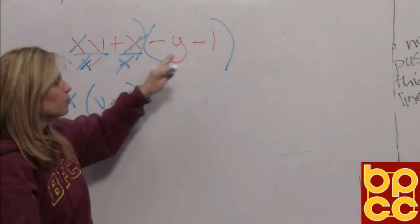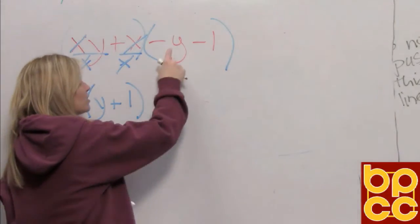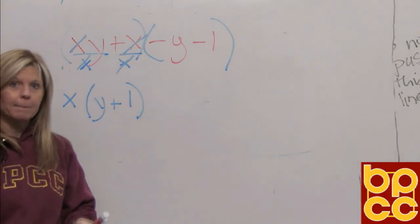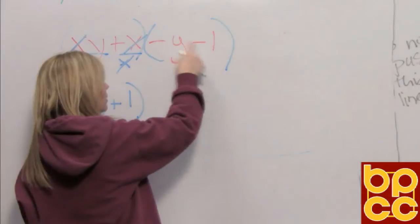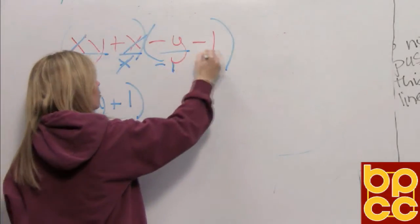Now, you must do the GCF of these terms. Now, I know what you're thinking. Well, I can't divide a letter and a number by the same thing. Well, you can. If you look, both this variable and number are negative. And you can divide them both by the number negative 1.